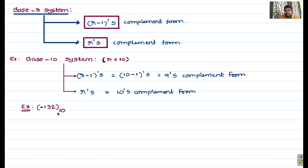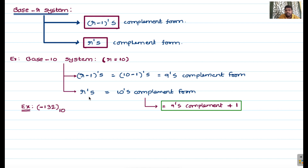Let's take the example of minus 132 in base 10. First, I will find the 9's complement, then add plus 1 to get the 10's complement. To find the 9's complement, you subtract 132 from all 9's — the same way that for one's complement in binary, you subtract from all 1's. After getting the 9's complement, add plus 1 to get the 10's complement. There is also an alternate direct method for 10's complement which I will discuss.